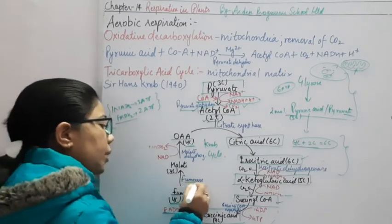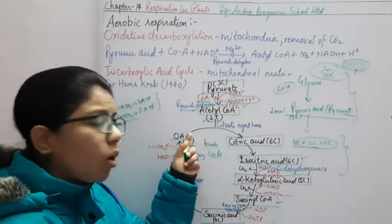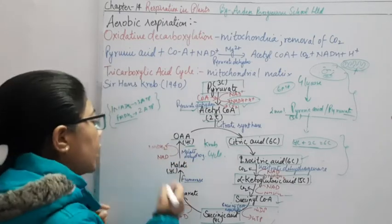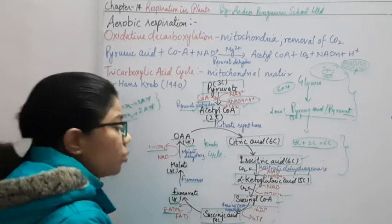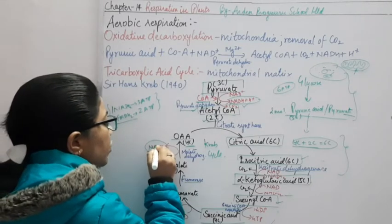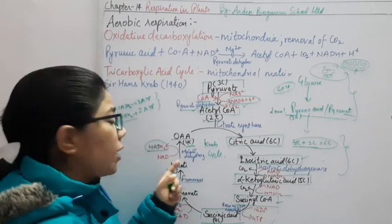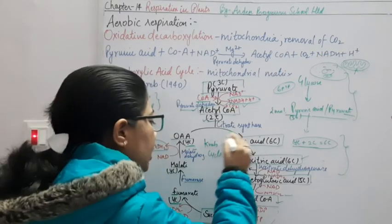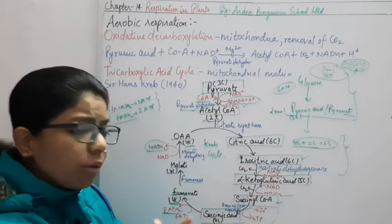The malic acid regenerates oxaloacetic acid, requiring energy in the form of NAD → NADH₂. The enzyme used here is malate dehydrogenase, acting on the malate. So again we get NADH₂. This cycle keeps on working because it must maintain this 4-carbon acceptor molecule so it can keep accepting the 2-carbon acetyl CoA to form the 6-carbon compound again.